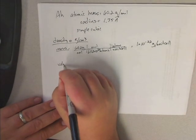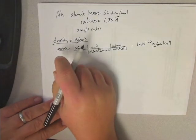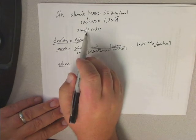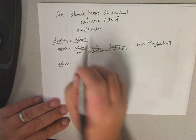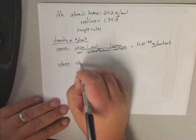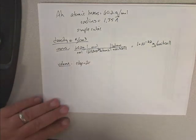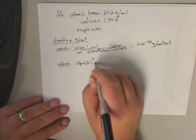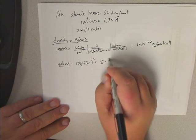The volume, we know that a simple cubic arrangement, the edge is equal to 2r. So if we cube that, we get the volume is equal to 8r cubed.